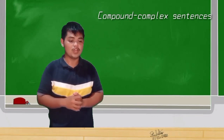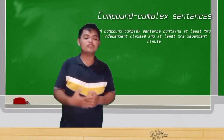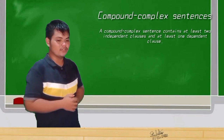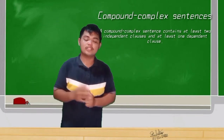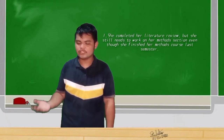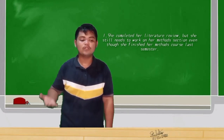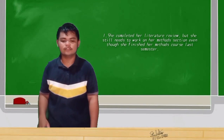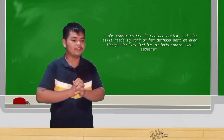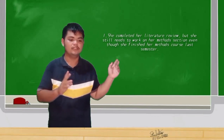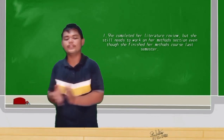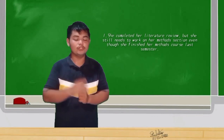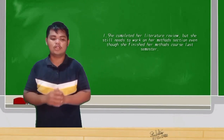The last type is the compound-complex sentence. Who can give its definition? None. A compound-complex sentence contains at least two independent clauses and at least one dependent clause. Example: 'She completed her literature review, but she still needs to work on her methods section, even though she finished her methods course last semester.' The first independent clause is 'she completed her literature review,' and the second independent clause is 'she still needs to work on her methods section.'